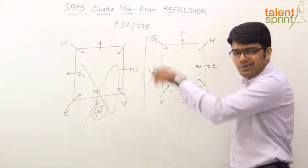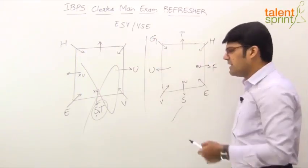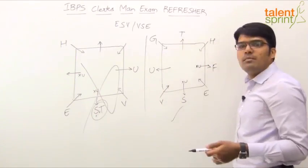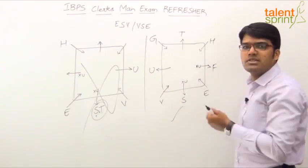So, if you start reading from S in the clockwise direction. S, V, U, G, T, H, F is the arrangement. I think, like I said, appears to be complex, but simple. It doesn't take more than two minutes, I would say, if you complete it.